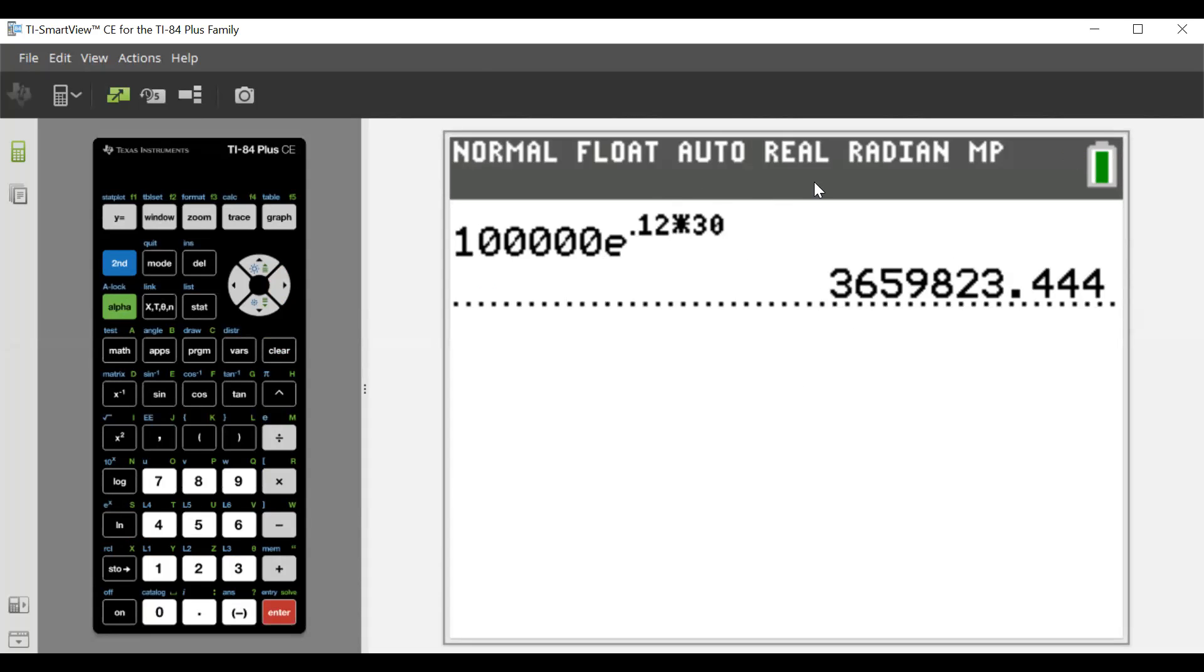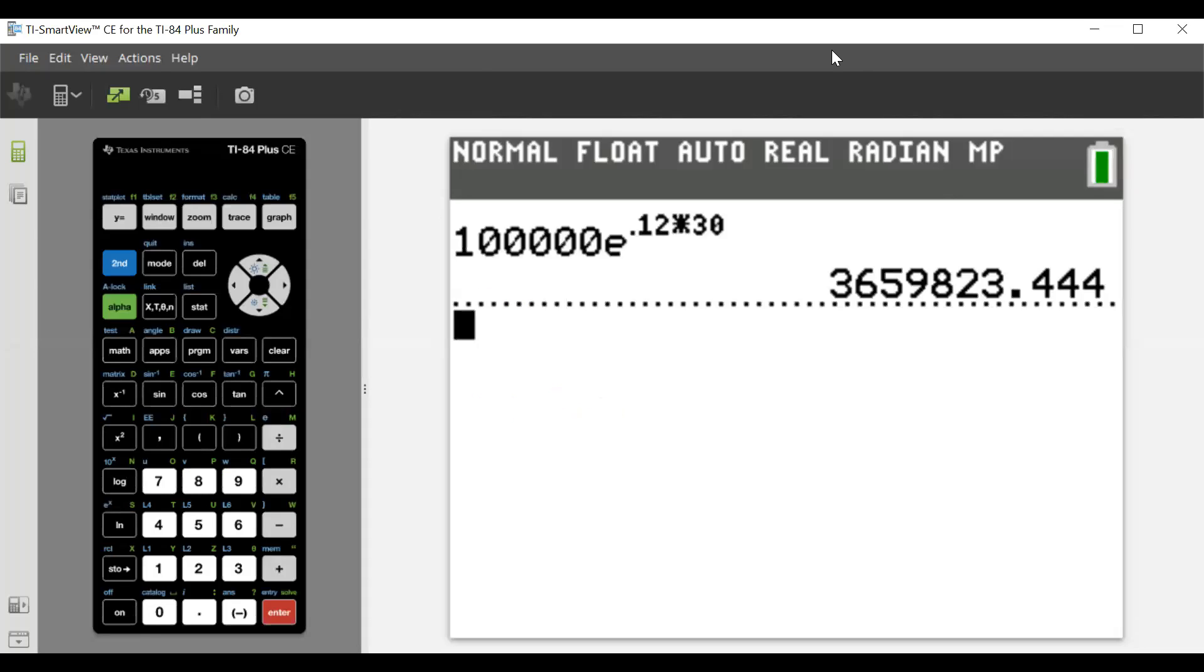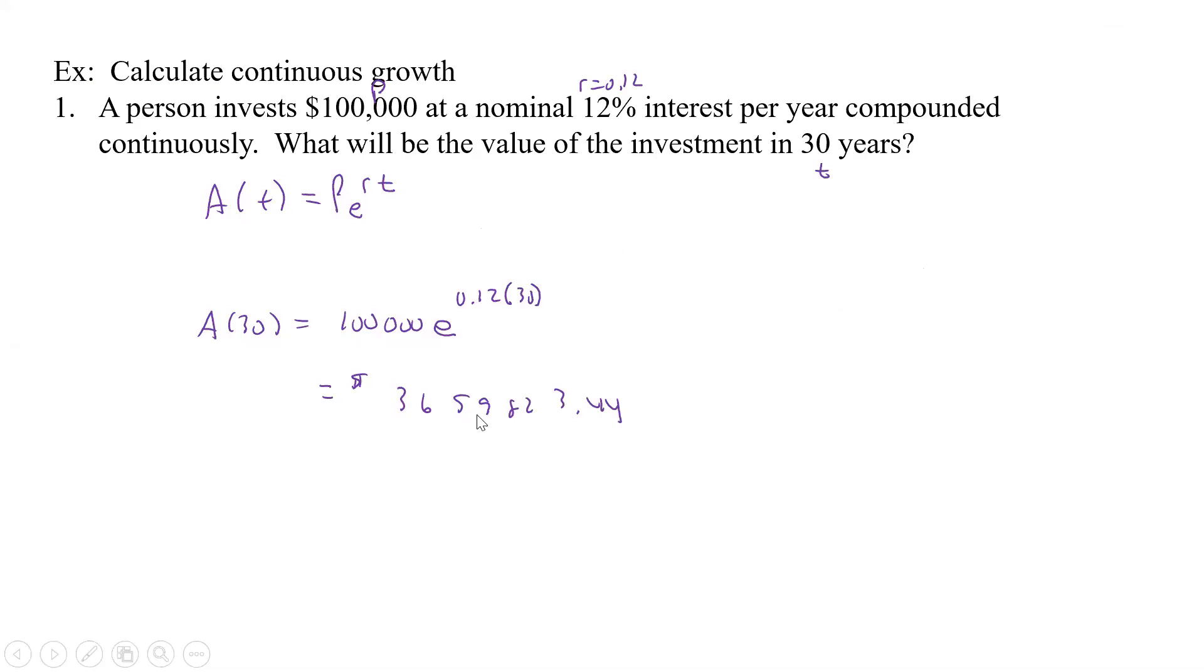Now once we're doing these, we're actually going to have to use to the nearest penny. And so that's going to give us 3, 6, 5, 9, 8, 2, 3.44. Make sure I wrote that down right: 365,982.44. So $100,000 at 12% over 30 years gives us almost $4 million. That's pretty good for compounding continuously.